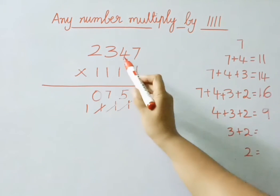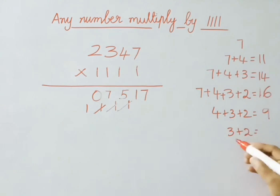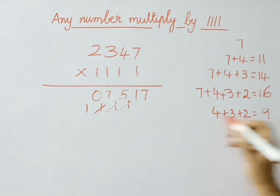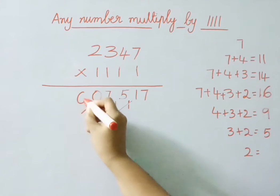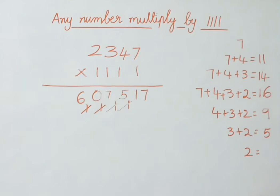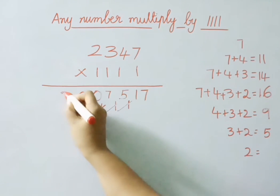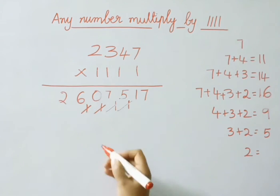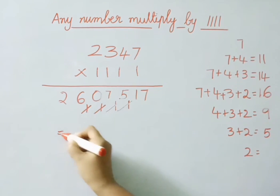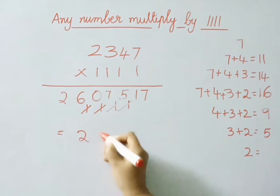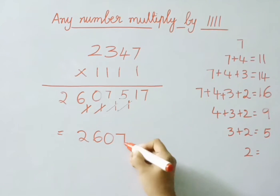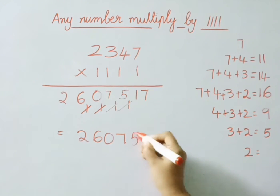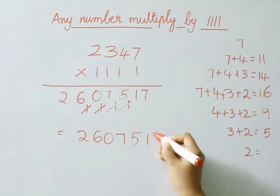Now add the last 2 digits: 3 plus 2 is 5, 5 plus carry 1 is 6. And write down the last digit as it is. So the final answer is 2,626,07517.